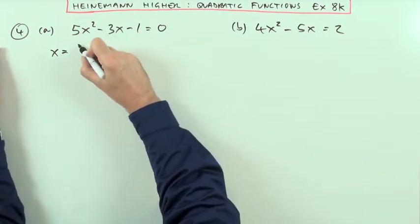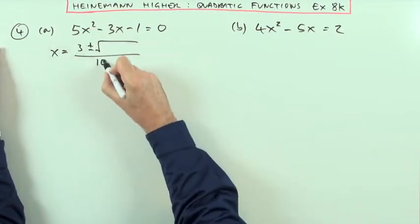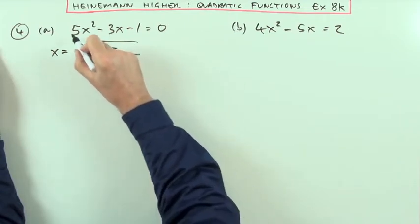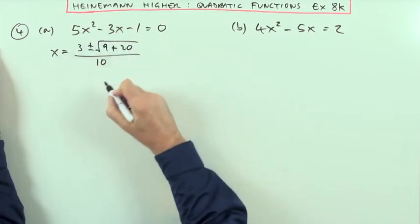I know it's going to be the negative of that, of the b term, plus or minus the square root of... all over 2 times the first one is 10, and then it's going to be the middle one squared minus 4 times 5 times negative 1, so that's plus, so that's going to be plus 20.